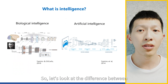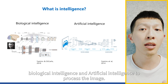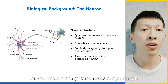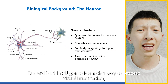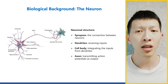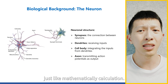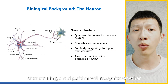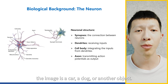Let's look at the difference between biological intelligence and artificial intelligence in processing images. On the left, the image shows visual signals input from the retina to the visual cortex — it is very abstract. But artificial intelligence processes visual information another way: an image is a digital number, and it will do some transformation, just like a mathematical calculation. After training, the algorithm will recognize whether the image is a car, a dog, or another subject.